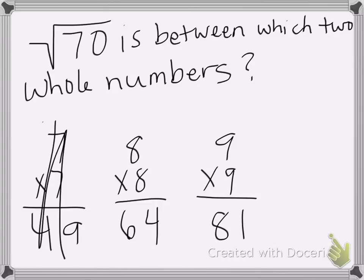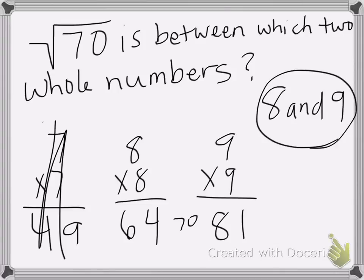So that means that 70 is between 64 and 81. So my answer, I'm going to write it to say 8 and 9. So the square root of 70 is somewhere in between 8 and 9.